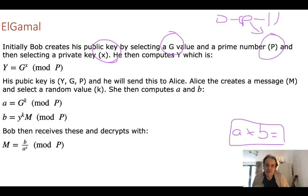So Bob initially creates a private key X, that's a random value. Bob then calculates a Y value which is G, the generator value, to the power of X mod P. So his public key then becomes Y, G, and P, and his private key is X.